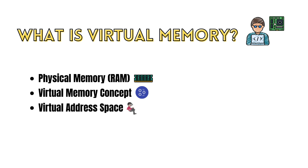Each process running on the system is given its own virtual address space, which is typically a large and continuous block of addresses. Virtual address space is divided into sections, including code, data, and stack.